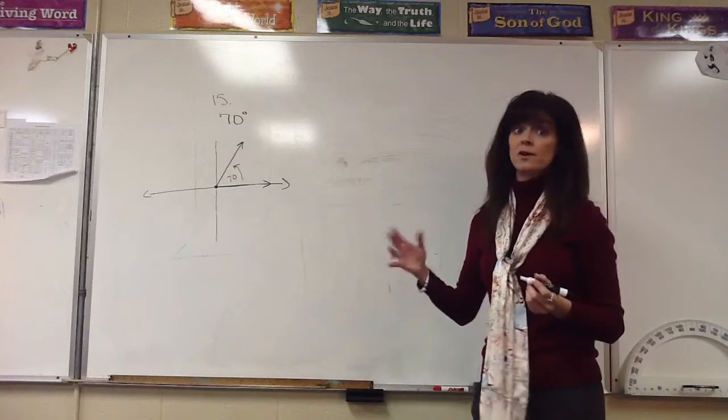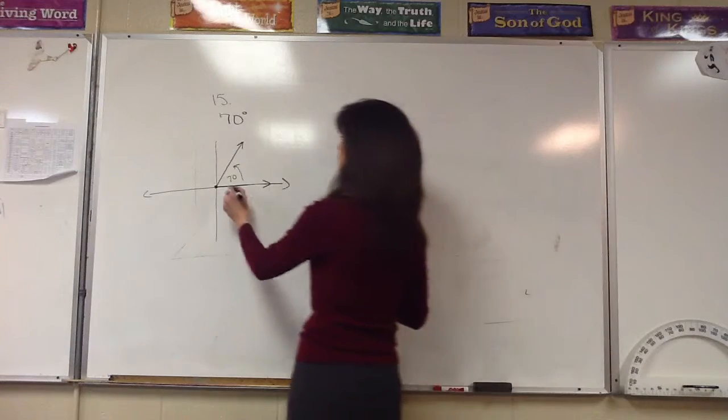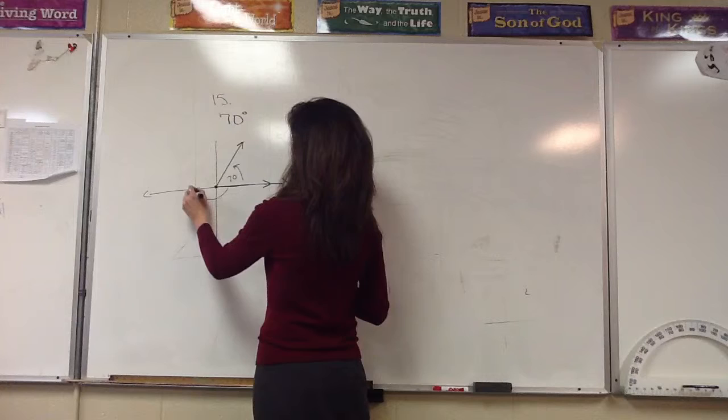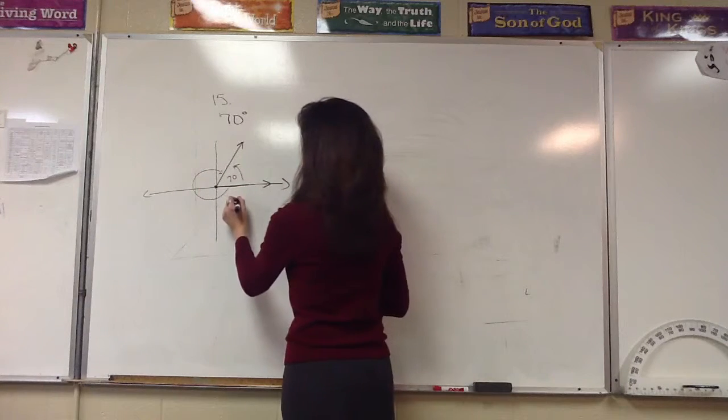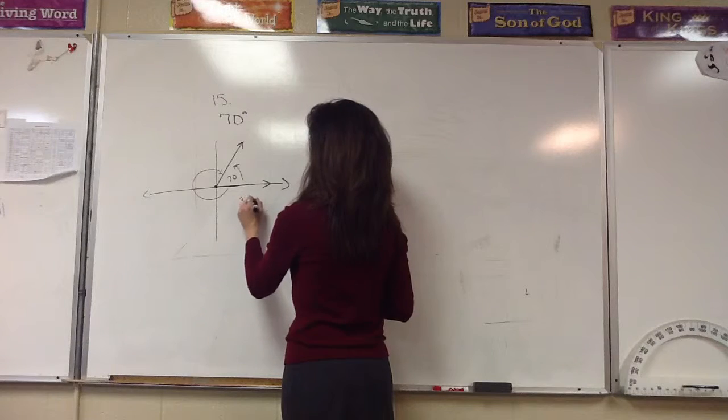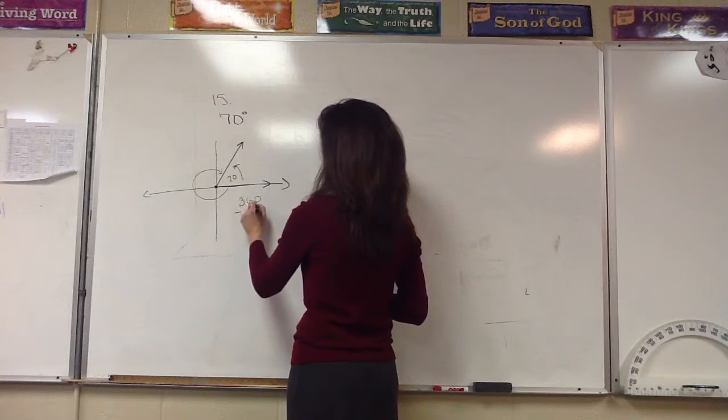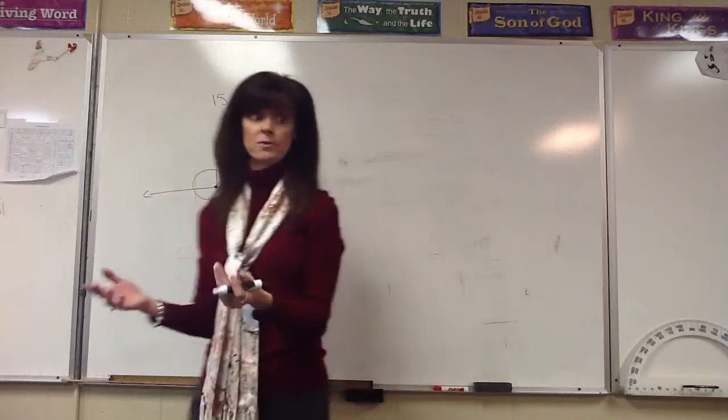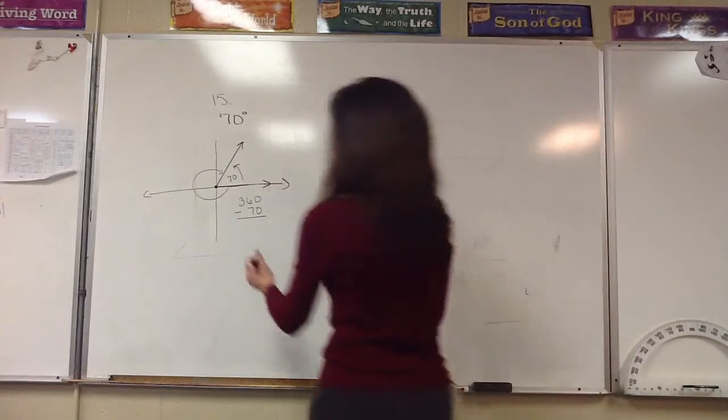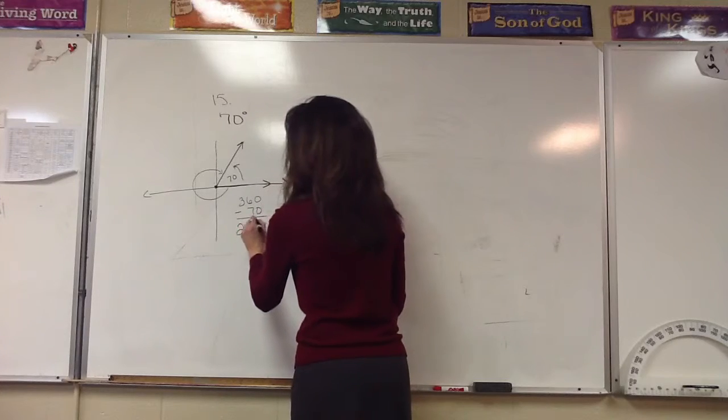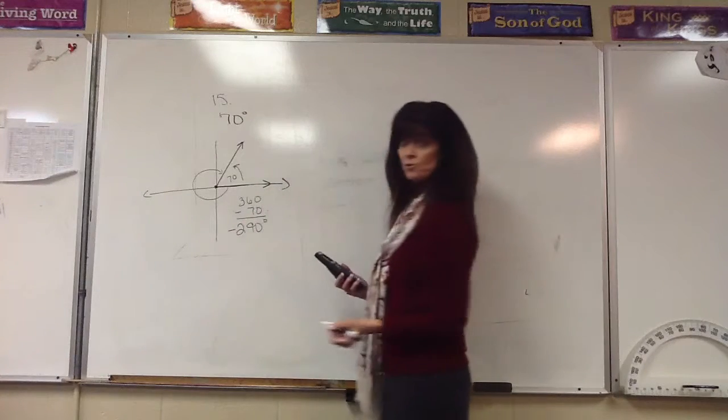We're going to draw a negative angle. If you remember, negative angles will go counterclockwise, and the way we're going to find the degree of that angle is by saying 360 degrees minus the 70 degrees that we have already. So we take those two and subtract them, and we should come up with 290 degrees, or rather, negative 290 degrees.